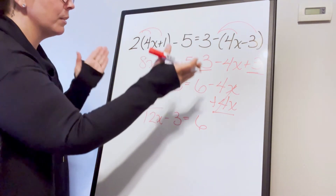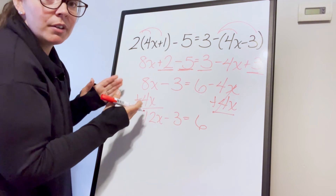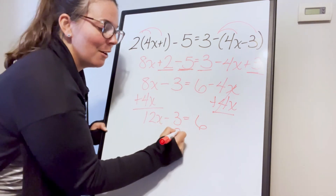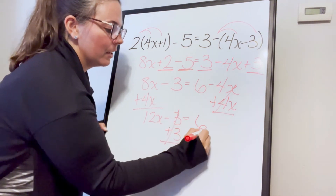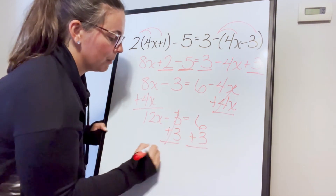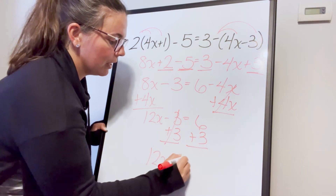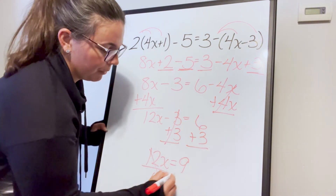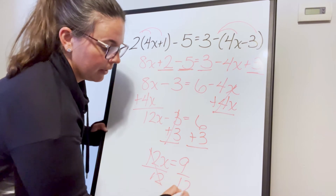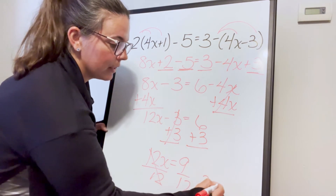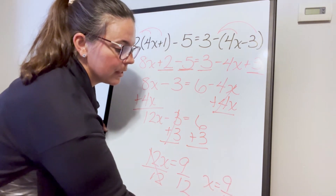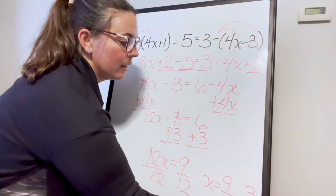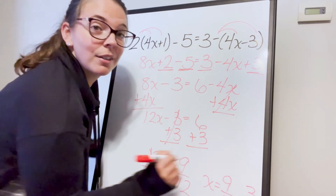Once we distribute, combine like terms, and move our variables over, we can solve like a normal two-step equation. So 12x equals 9; divide each side by 12 and we get x equals 9 twelfths. Simplifying by dividing each by 3 gives us x equals three-fourths.